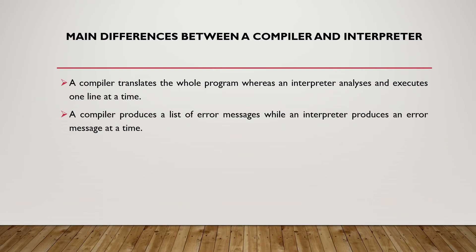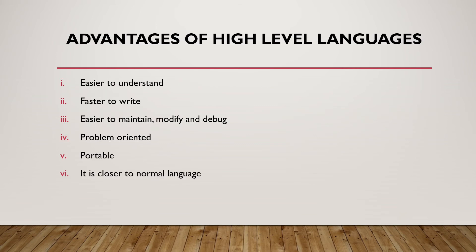The main differences between a compiler and an interpreter: a compiler translates the whole program, whereas an interpreter analyzes and executes one line at a time. A compiler produces a list of error messages, while an interpreter produces one error message at a time. The advantages of using high-level languages are that they are easier to understand, faster to write, easier to maintain, modify, and debug.